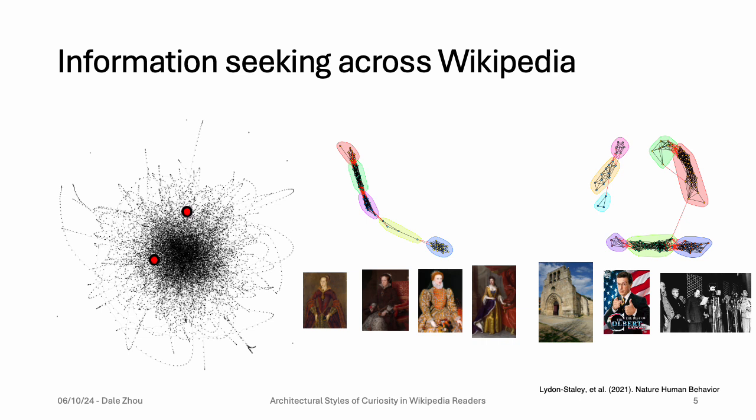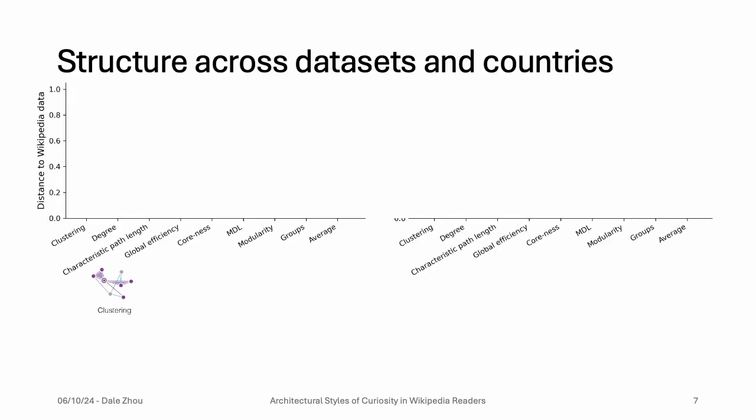We can describe the form and organization of networks that each individual constructs and compare the networks also generated by different models. Several measures can be used to characterize the tightness of hunter-like curiosity on the left and the looseness of busybody-like curiosity on the right. Clustering measures how tightly the nodes form into groups. Degree indicates the number of connections each node has — how dense the local area is. Path length tells us the average distance between nodes. Core-periphery structure tells us how much there's a densely connected core versus a more sparsely connected periphery. And modularity helps us identify and characterize the number of dense communities within the network. Together, these metrics can help us reveal the architecture of the networks that people build.